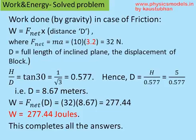The distance traveled by the block is the hypotenuse. H by D is tan 30, therefore D becomes 8.67 meters, so F times D becomes 277.44 joules.